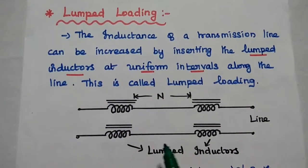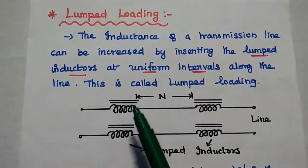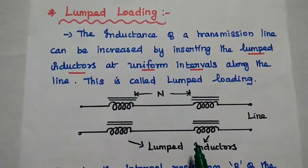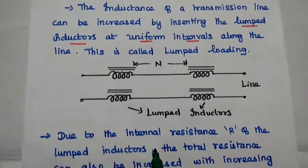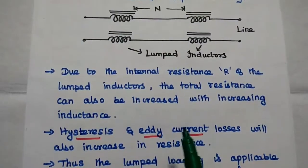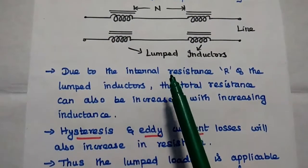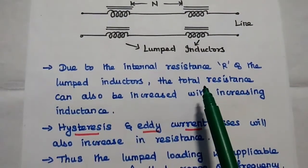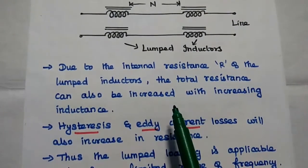This is the transmission line. Along this transmission line, we are going to insert physical lumped inductors at uniform intervals, by which we can increase the overall inductance. This is called the lumped loading method. There is a major disadvantage: due to the internal resistance of the lumped inductors, the total resistance of the line increases along with the inductance.